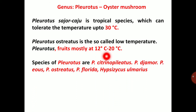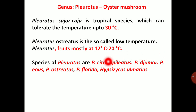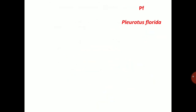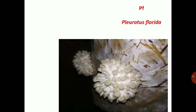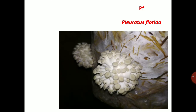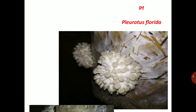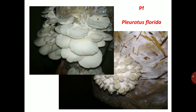Species of Pleurotus include Pleurotus citrinopileatus, Pleurotus djamor, Pleurotus eos, Pleurotus ostreatus, Pleurotus florida, and Hypsizygus ulmarius. Pleurotus florida is one key species, shown here in bud stage.